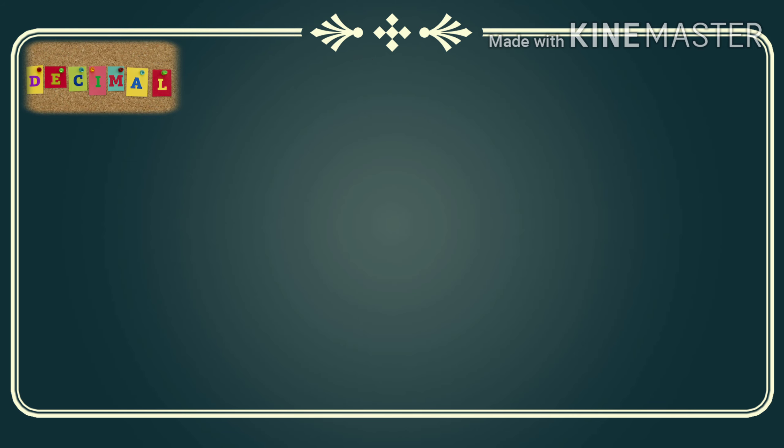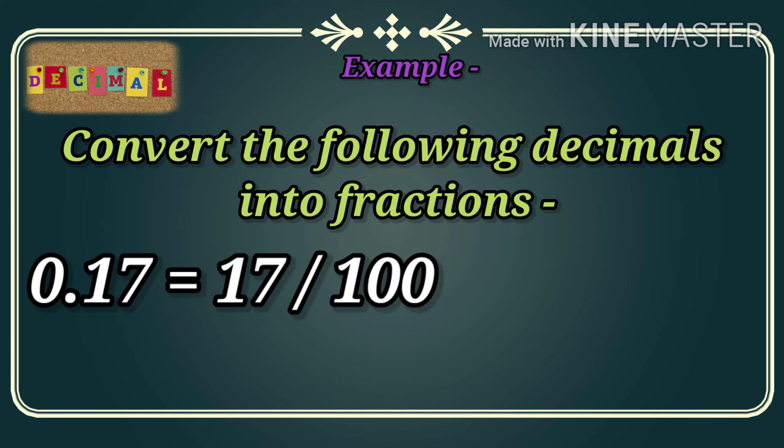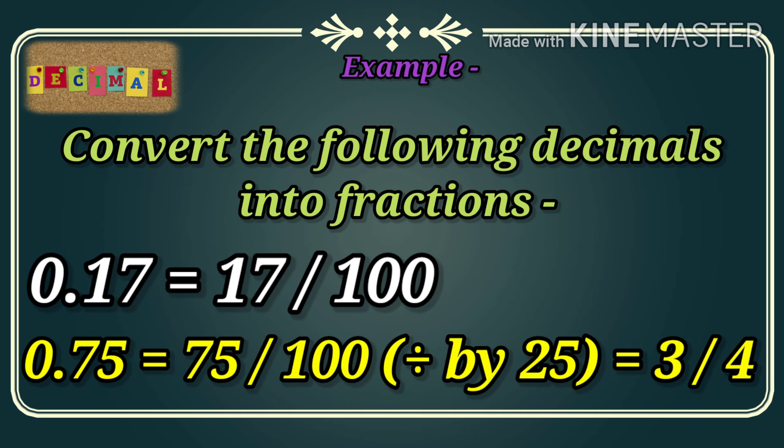For better understanding, see the examples. Convert the following decimals into fractions. Given 0.17 — after the decimal there are two digits, so we write 17/100. Next example: 0.75 — the conversion gives 75/100, and we can simplify by dividing both terms by 25, so the answer is 3/4. We have reduced this fractional term into its lowest term.